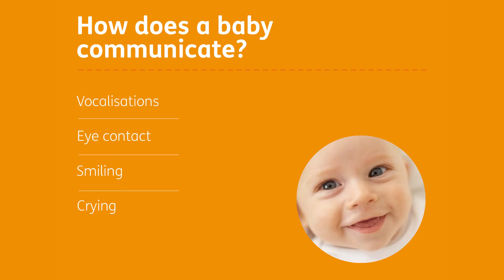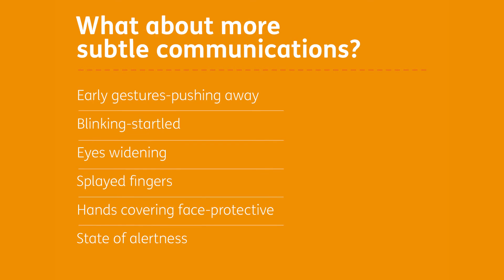So how does a baby communicate? The basics are the vocalisations they make, eye contact — looking at us or at an object of interest — smiling, and crying. If we think about more subtle communications, there are very early gestures such as pushing something away to reject it. More subtle signs include a blinking, startled appearance, and eyes widening, which can often show early stages of fear — for example, if something is happening to them that they don't like.